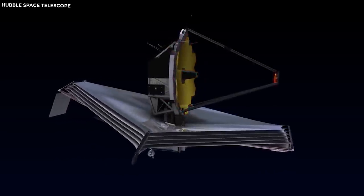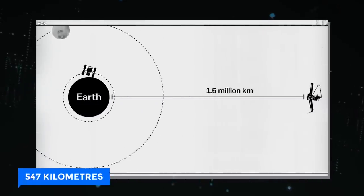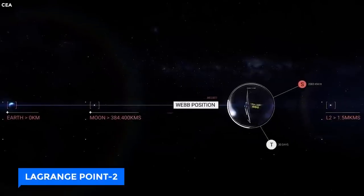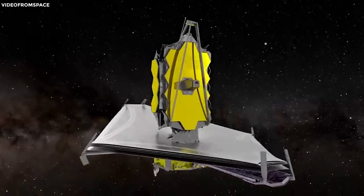For effective shielding, the JWST must sit 1.5 million kilometers from Earth, far from the 547 kilometers of Hubble. Similarly, a special spot, Lagrange L2, provides stable positioning due to gravity.